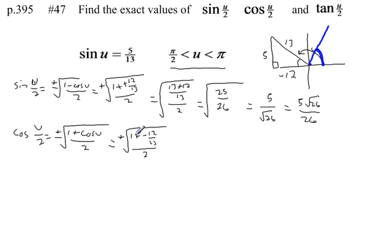This 1 I can write as 13 over 13. Thirteen plus negative 12 is going to equal 1 over 13, still over 2. If I take half of the top and bottom fraction, I get the square root of 1 over 26. The square root of 1 is 1. The square root of 26 we don't know. So I can write this as the square root of 26 over 26.